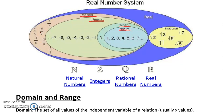Some fractions we can represent very nicely with a decimal. So one half, for example, we can represent as 0.5. But something like two thirds, we represent by 0.66 repeated, and that never actually ends.